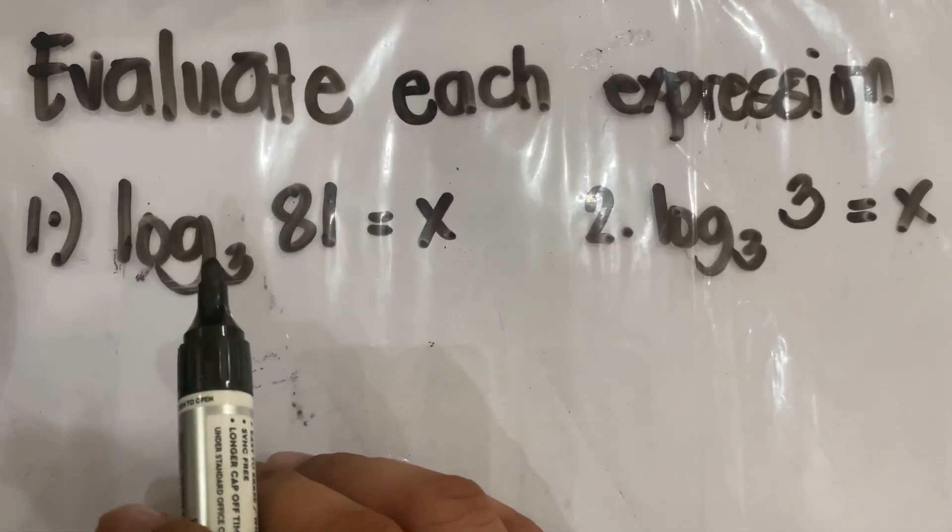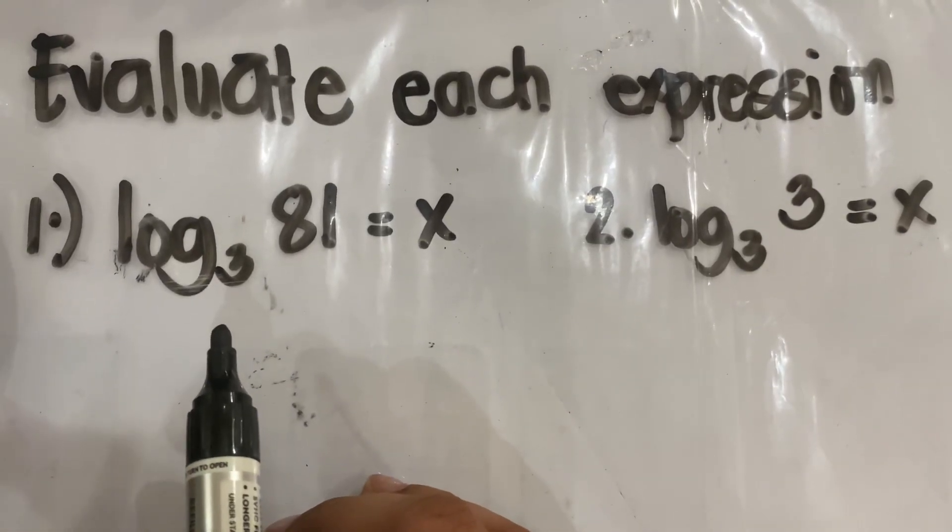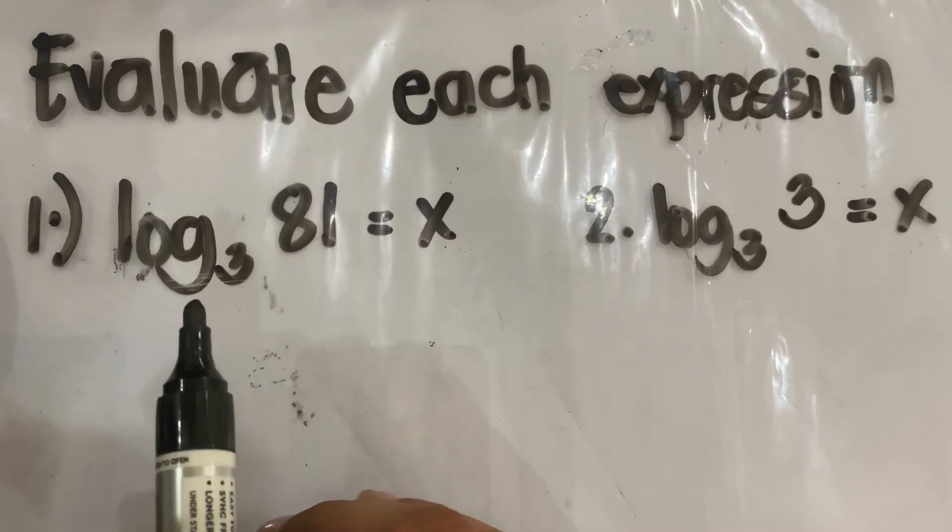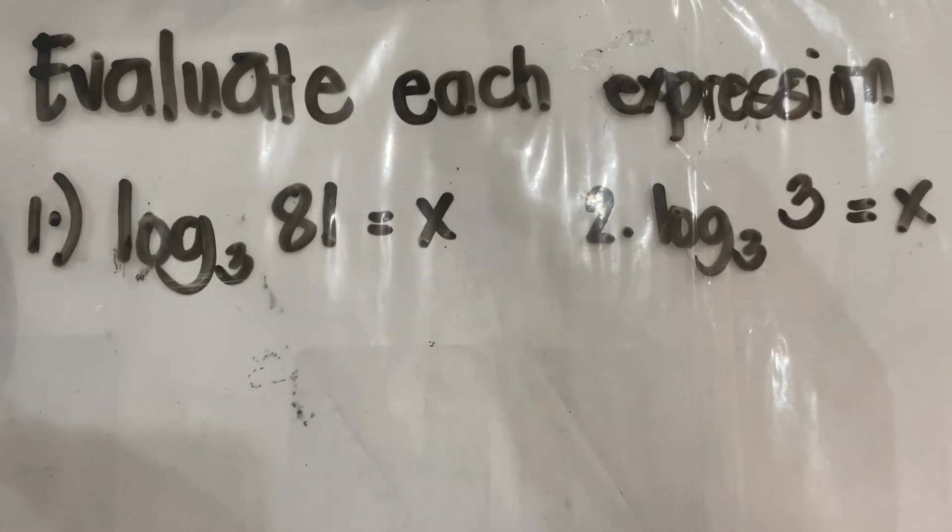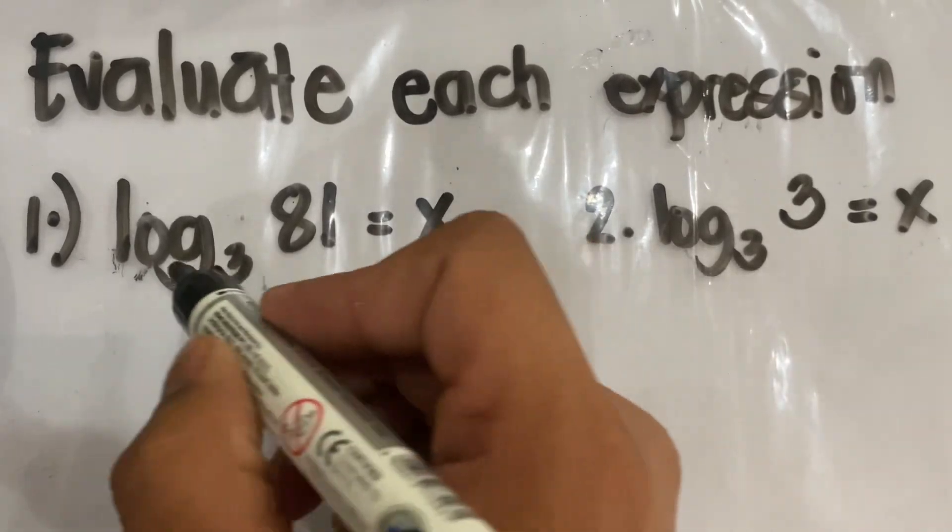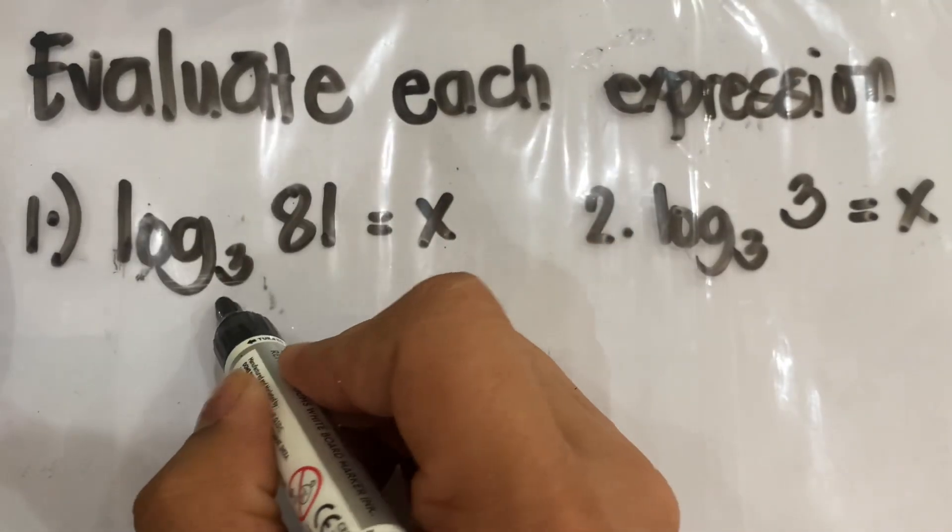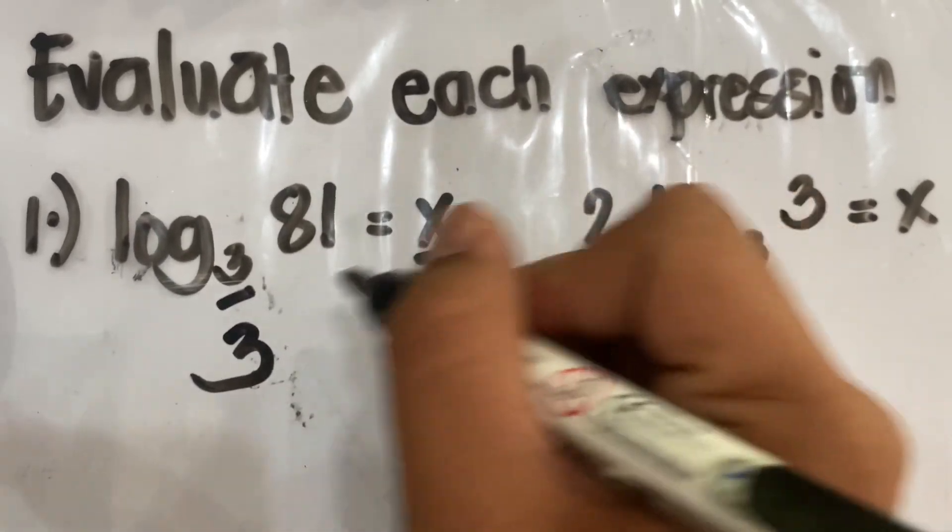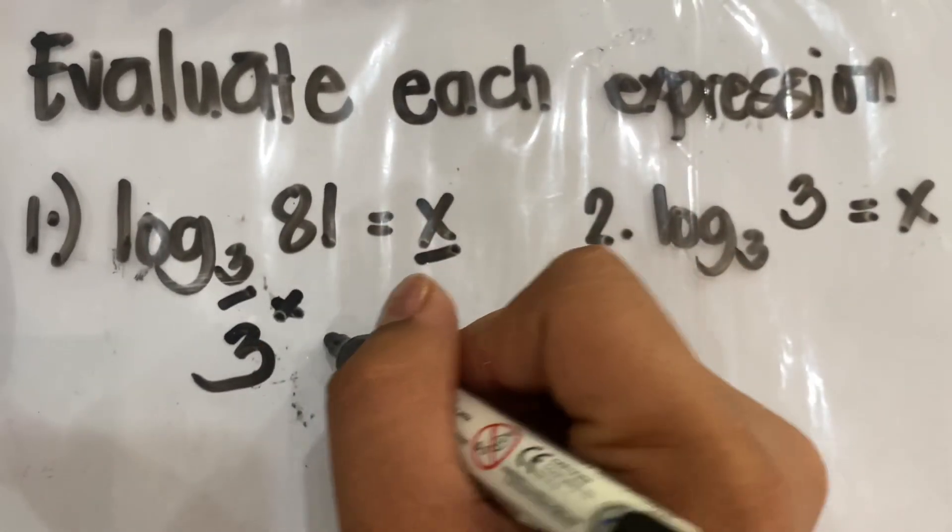Now, to evaluate this, we have to transform this logarithm or logarithmic form of the given into the exponential form. So we have here, based on our previous presentation, we have here our base. So we have 3. Our exponent is here. So 3 to the power of x is equal to the result is 81.